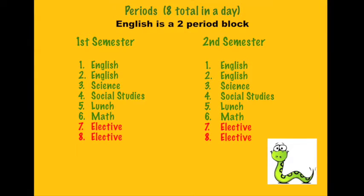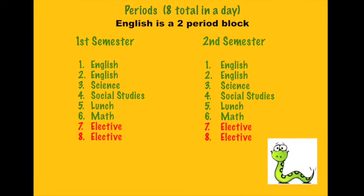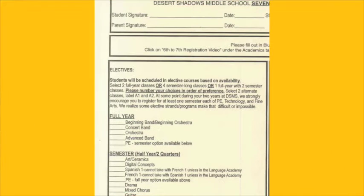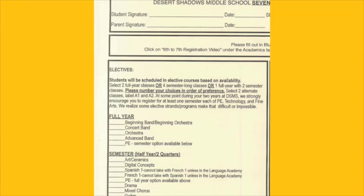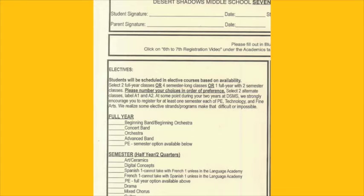Let's take a look at the card and see what your options are for the different electives. Full year courses are the classes that you would be in from the time school starts in August all the way through May. They include beginning band and beginning orchestra, concert band, advanced band, and PE. PE is also offered for just a semester, or half the school year.